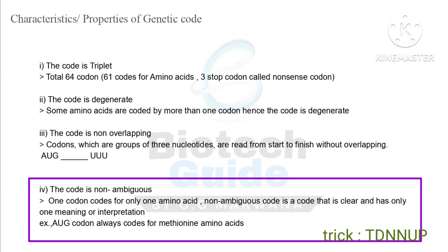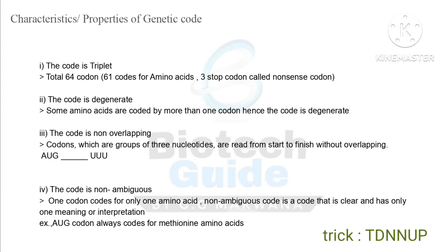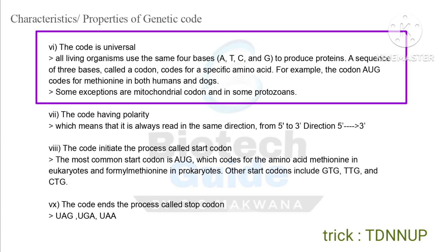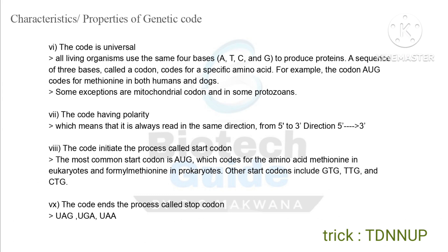A non-ambiguous code is a code that is clear and has only one meaning or interpretation. For example, if AUG codes for methionine, then AUG in any other mechanism always codes for methionine. Fifth, the code is universal — all living organisms use the same four bases A, T, C, G to produce proteins, and a sequence of three bases called a codon codes for a specific amino acid. For example, the codon AUG codes for methionine in both humans and dogs. Some exceptions are mitochondrial codons and some protozoan codons.